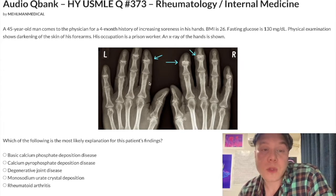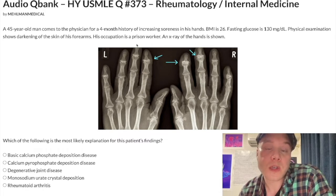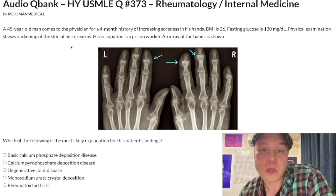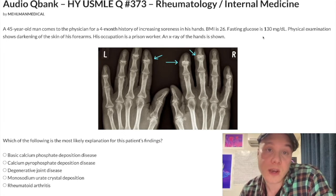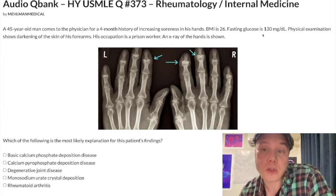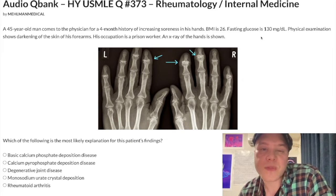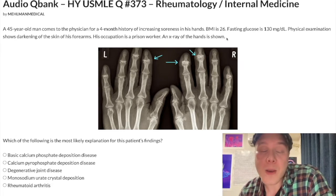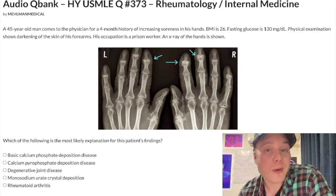Here's the thing: this guy has bronze diabetes, which is hemochromatosis. It's darkening of the skin from hemosiderin deposition from iron. He has diabetic-level glucose due to iron deposition in the tail of the pancreas where the islet cells are. And then you can get a myriad of other findings — infertility, cardiomyopathy (restrictive or dilated), and pseudogout.